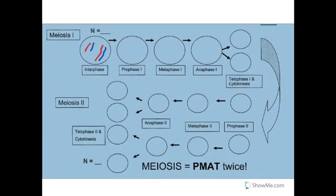So in meiosis, we're actually undergoing two nuclear divisions in order to split into our sperm cells and egg cells. Keep in mind that before meiosis begins at all, the DNA undergoes replication, just like it did before mitosis started. So in this example, N is going to equal two, so our 2N, or diploid cell, would have four chromosomes. And that's what we start with — we see one, two, three, four in interphase.